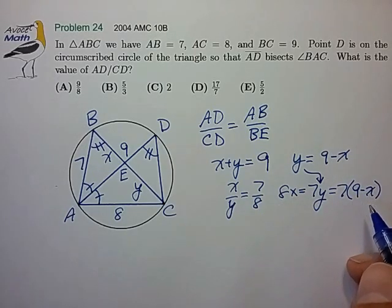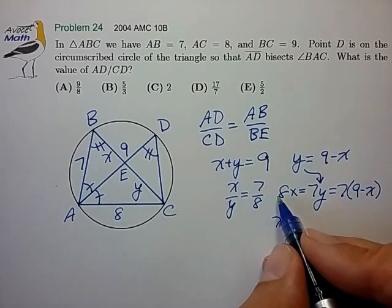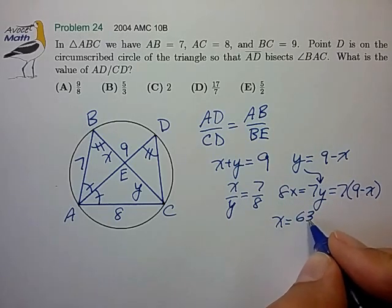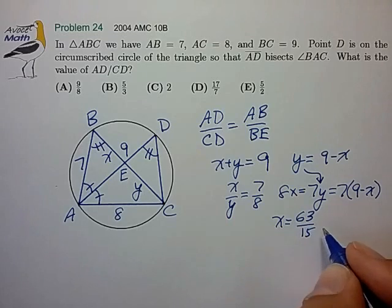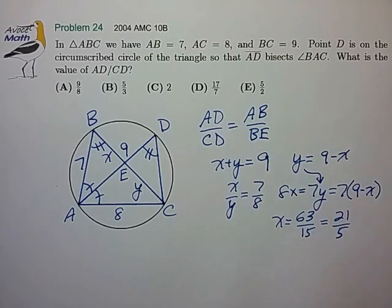And solve this equation now to find that X is equal to, what does that work out to? 15 over here. 7 times 9 is 63. X is equal to 63 over 15. Dividing top and bottom by 3, that reduces to 21 over 5.